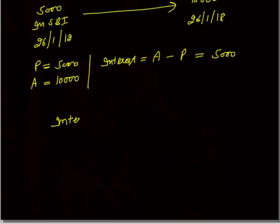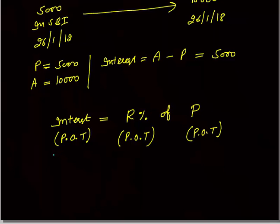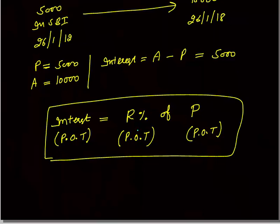How do we calculate interest? Interest for any period of time (POT) is equal to R% of P, where P is the principal and R is the rate of interest for that same period of time. This is a very important concept: any kind of interest, whether simple or compound, is always calculated as R% of P, where R and P both correspond to that particular period of time.